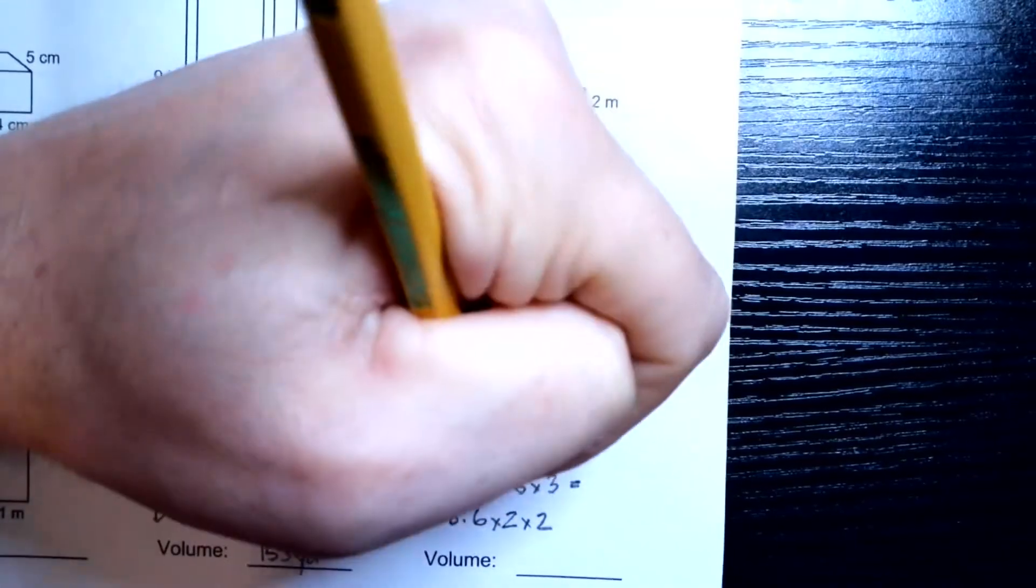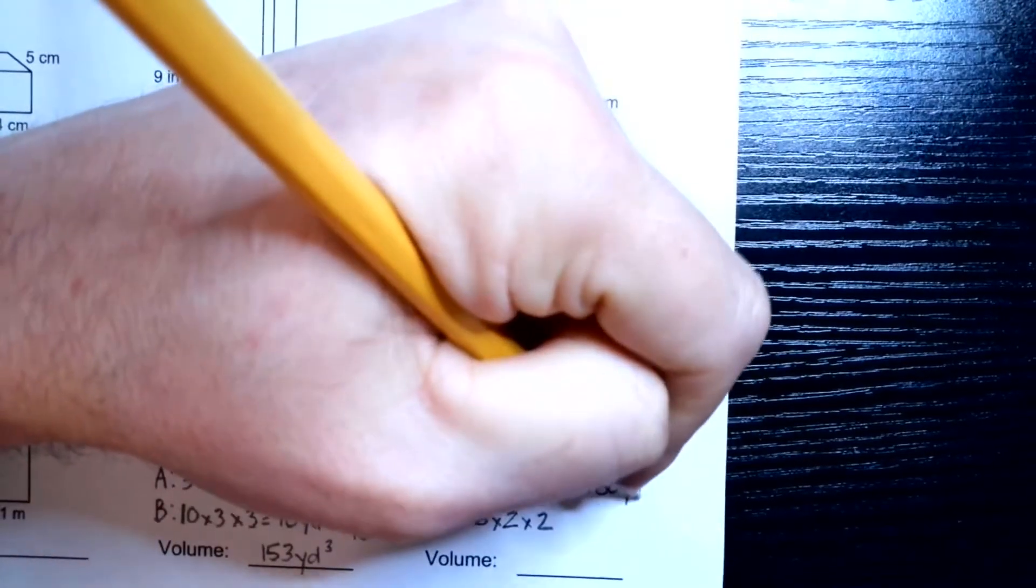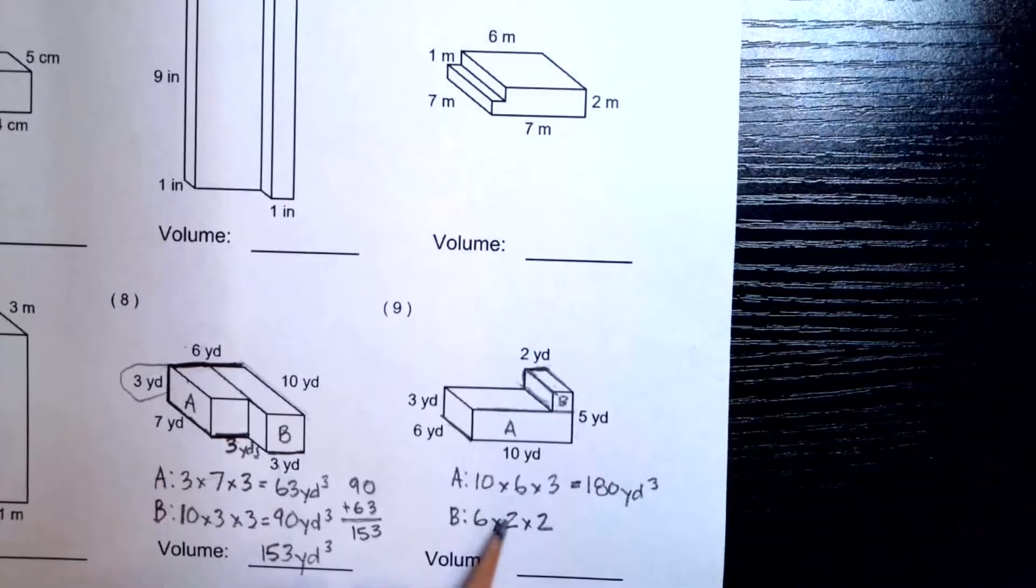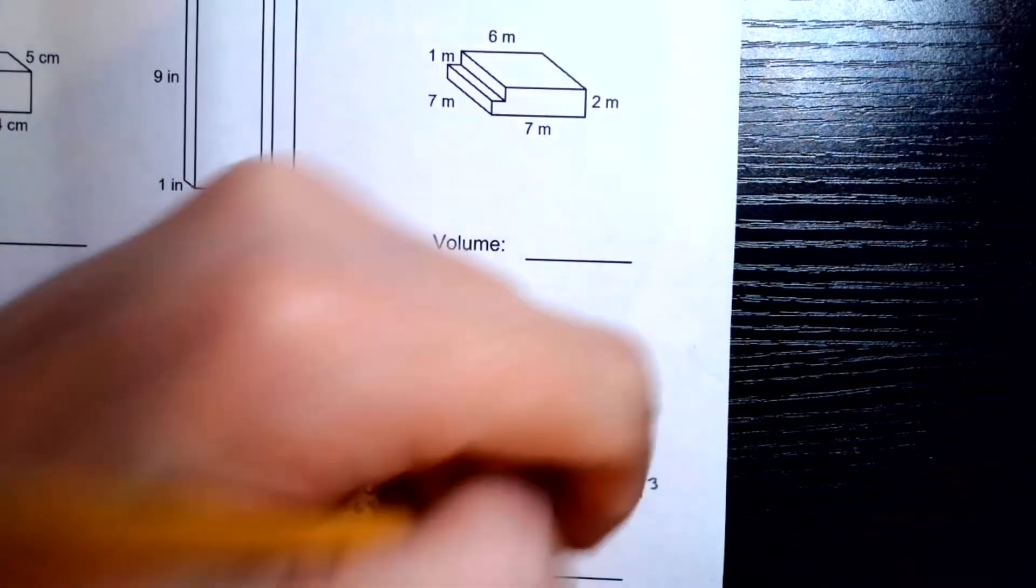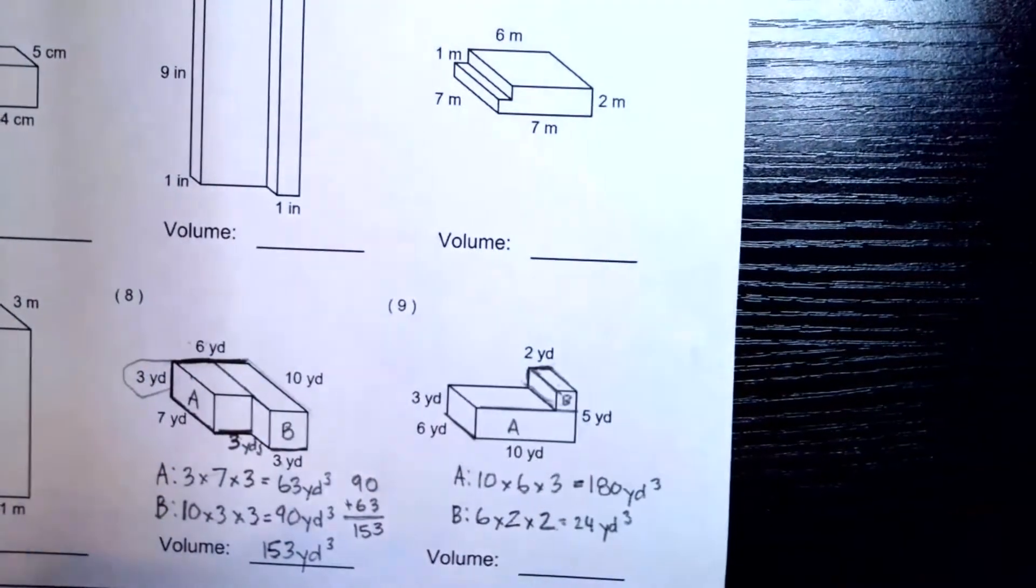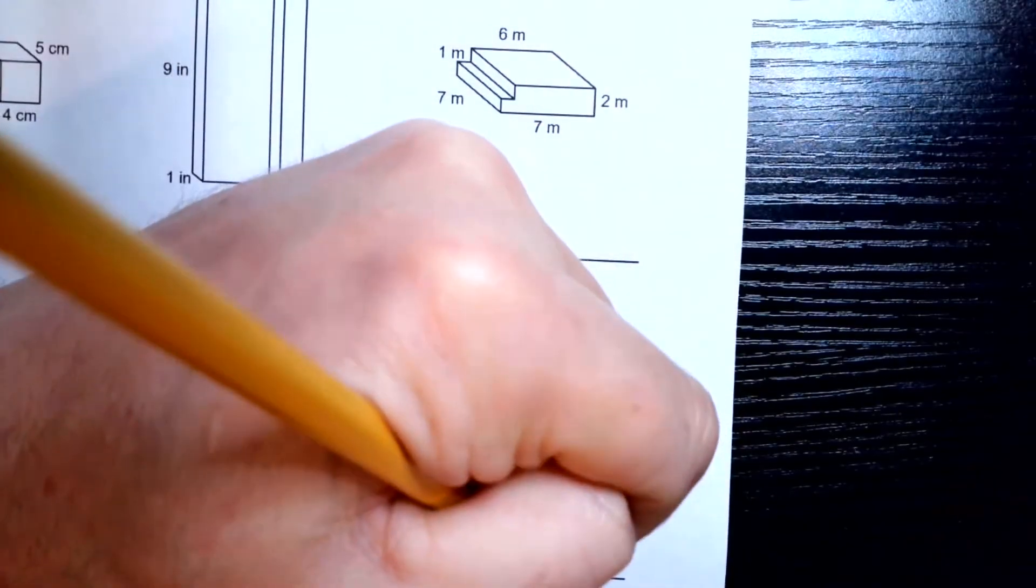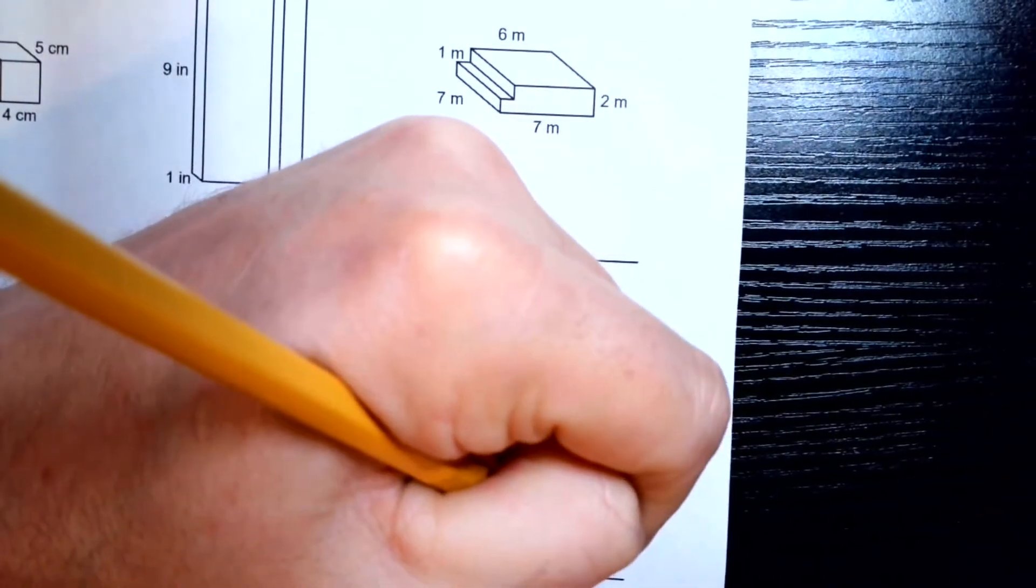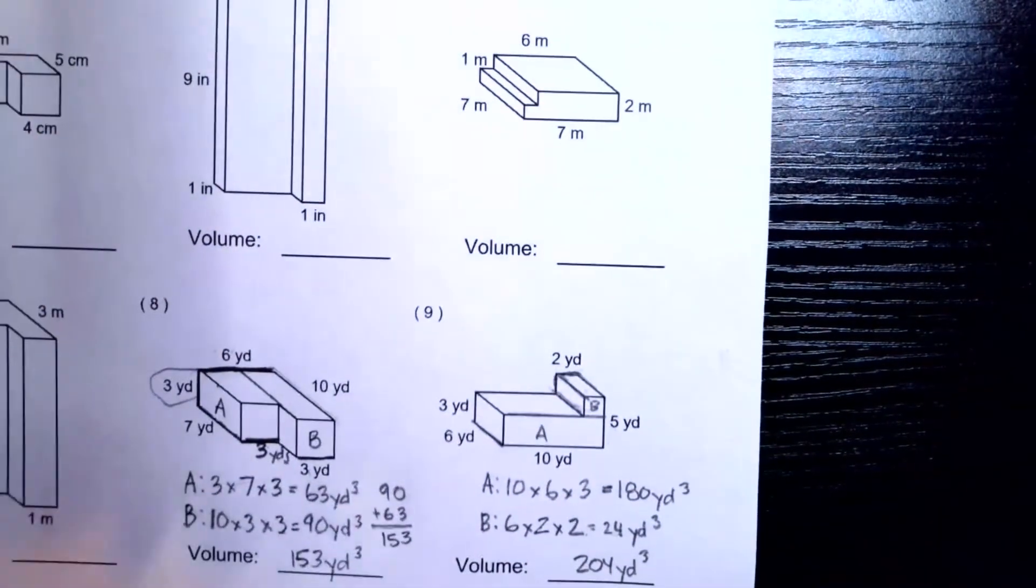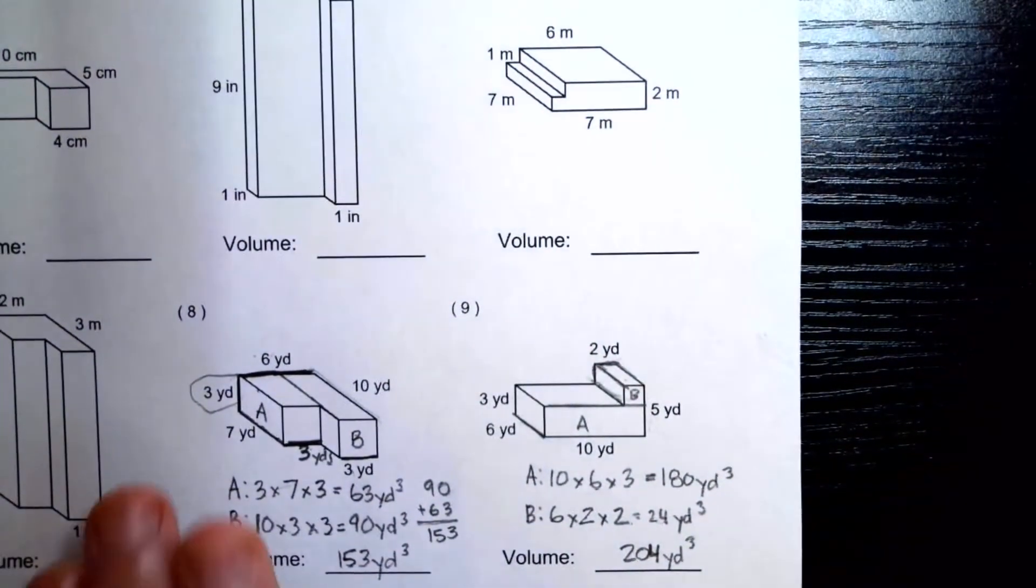I guess I'll just go in order. 10 times 6 is 60. 60 times 3 would be 180 cubic yards. And then, 6 times 2 is 12. 12 times 2 is 24 cubic yards. And we'll just add these. And I can do this one in my head. If I take 20 away from the 24 and add it, 20 plus 180 gives me 200. And then I just add the other 4. So, it's 204 cubic yards. So, we did 8 and 9.